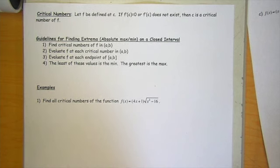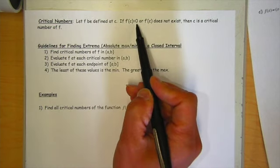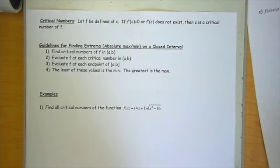So one vocab term, a critical number. The definition of a critical number is any place where the derivative is 0 or the derivative does not exist. And we learned that those are the only places in the interior where an absolute max or min can occur, or it could also be the endpoints.